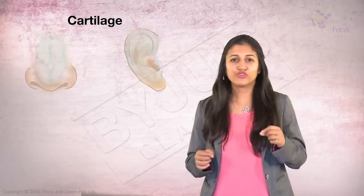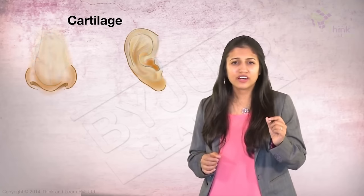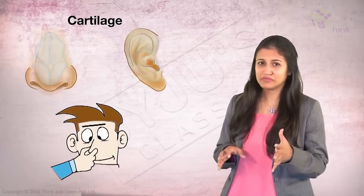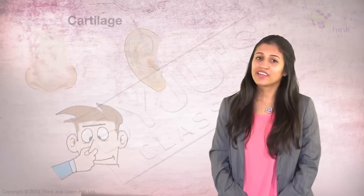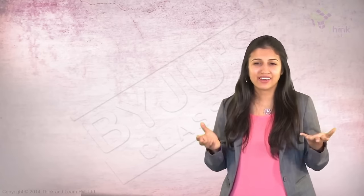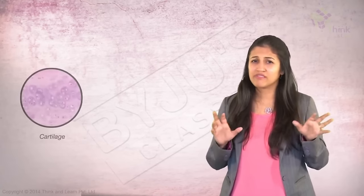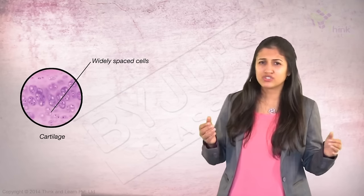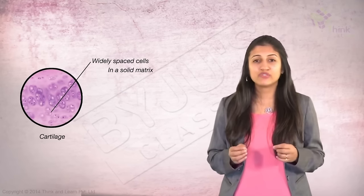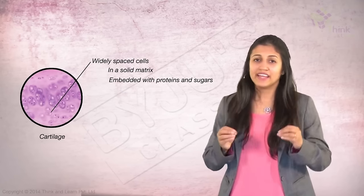Cartilage is found in your nose and your ears. Try twisting them a bit and you can see that this is actually possible. However, you cannot bend the bones in your arms or legs. Both are types of connective tissue, but see how different they are. And how does it look? It has some widely spaced cells and a solid matrix embedded with proteins and sugars.